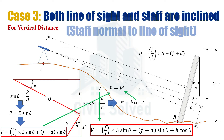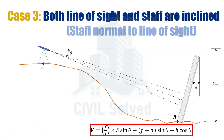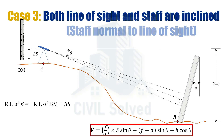We now have the final equations for H and V. Sometimes we also need to calculate the reduced level of point B. For that, a point of known reduced level (a benchmark) is given, and a backsight reading (BS) is taken on that benchmark. The reduced level of the instrument axis is obtained by adding the reduced level of the benchmark to the backsight reading. Then, for the angle of depression, subtracting V gives the final equation for the reduced level of point B.